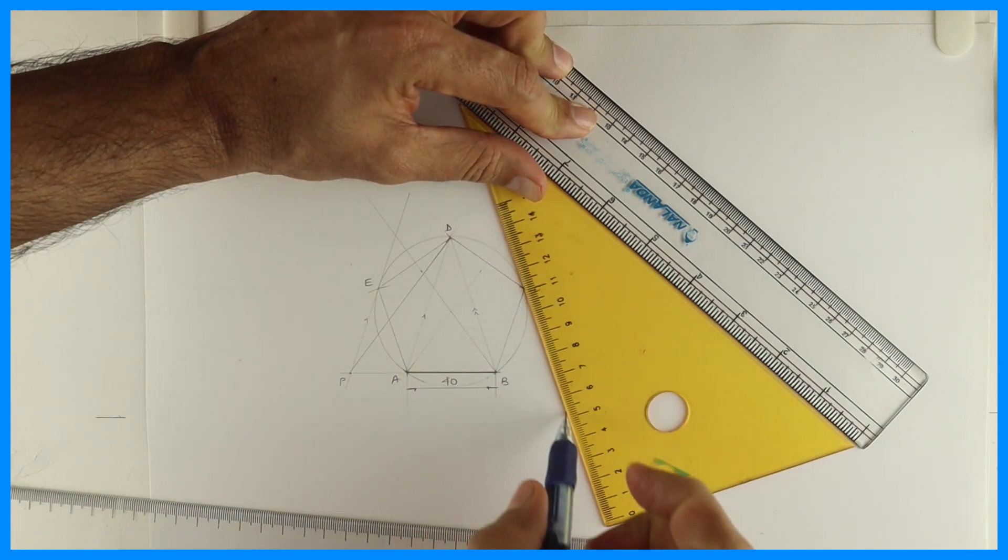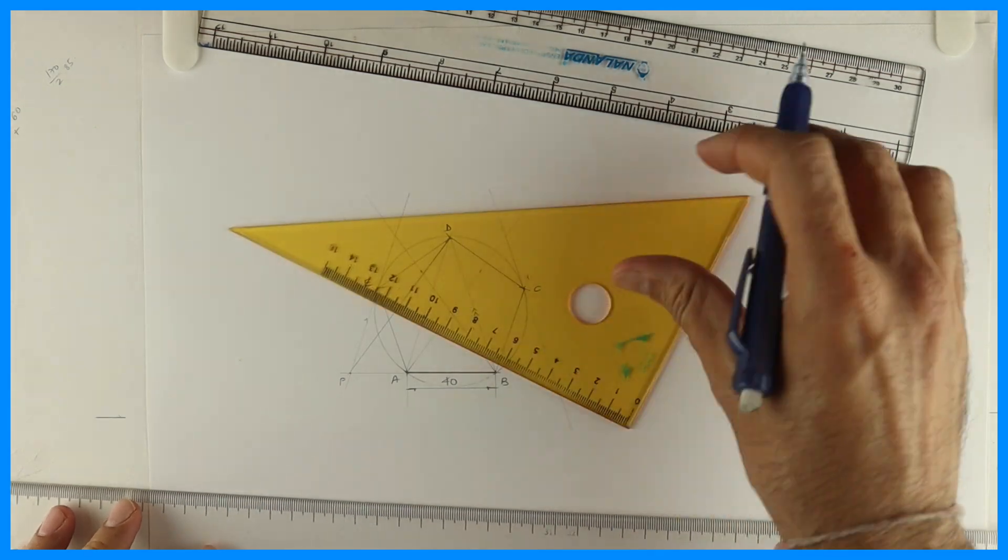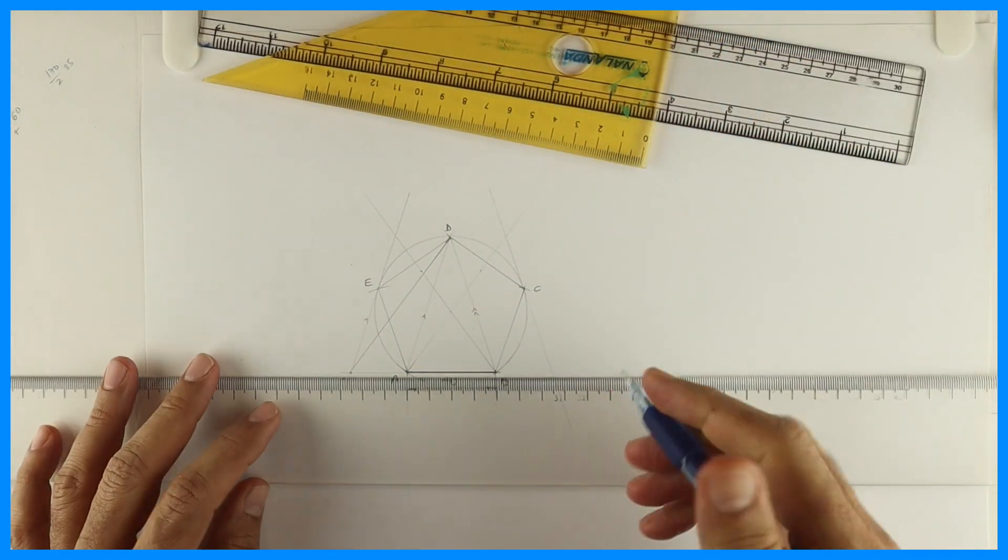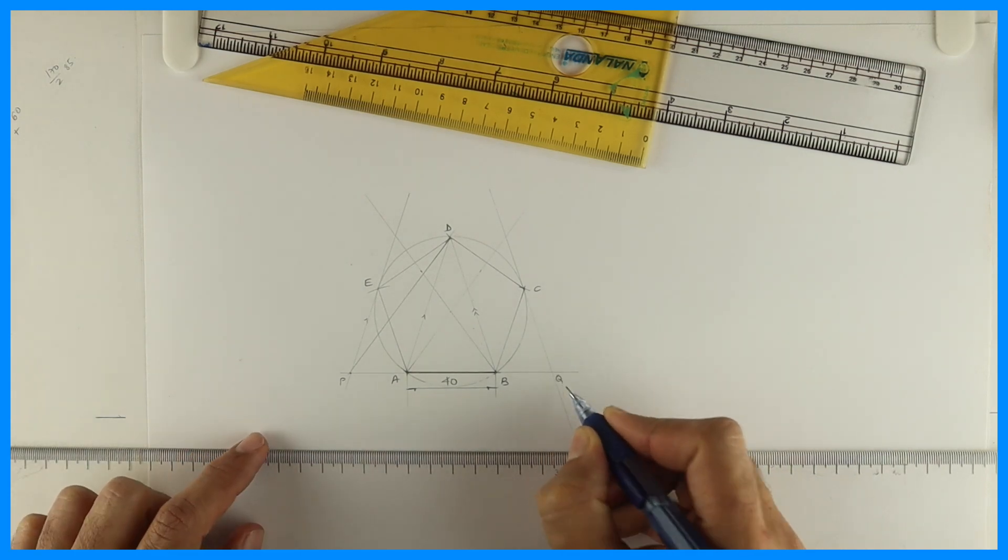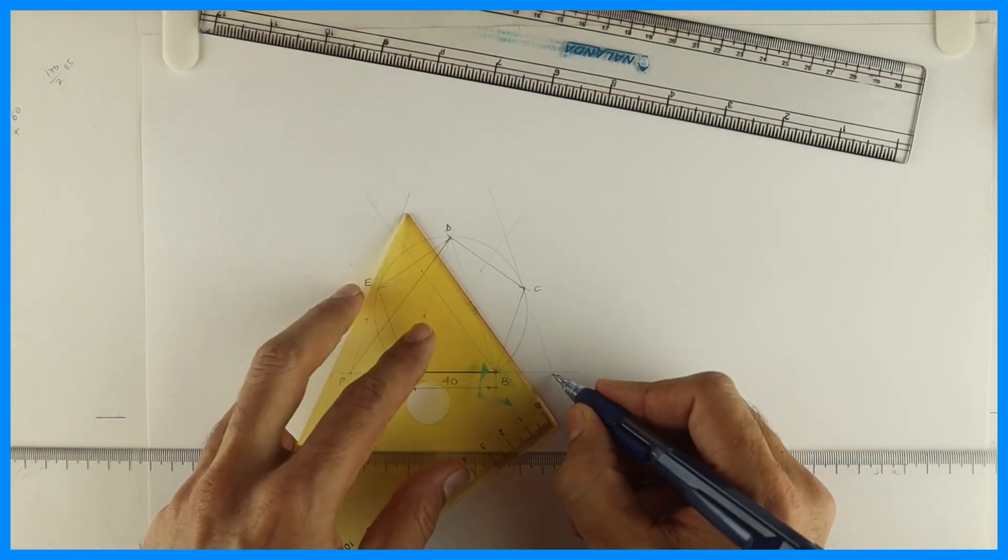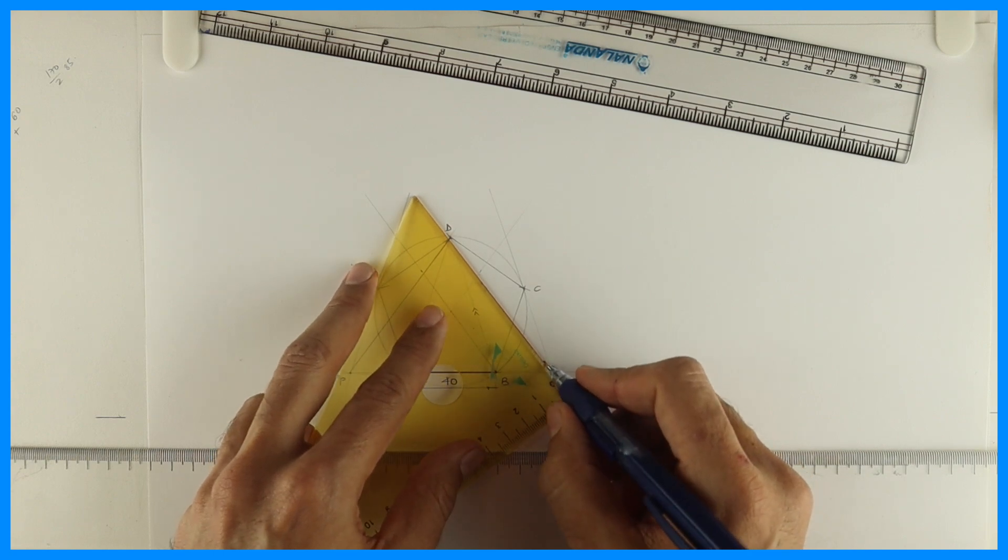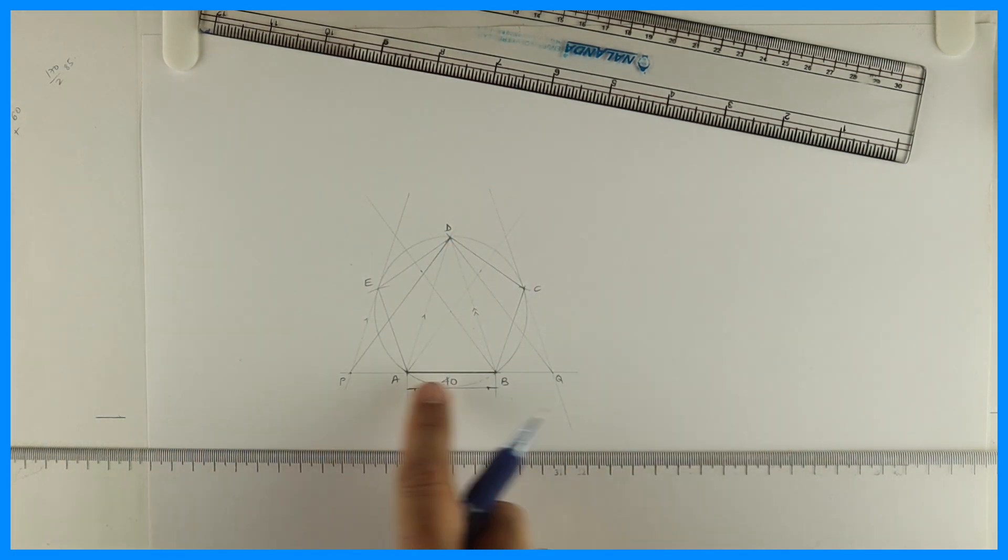See this, so I can draw parallel line and then I'll extend this, so wherever it will cut that is point Q. So instead of BCD now we have BQD.